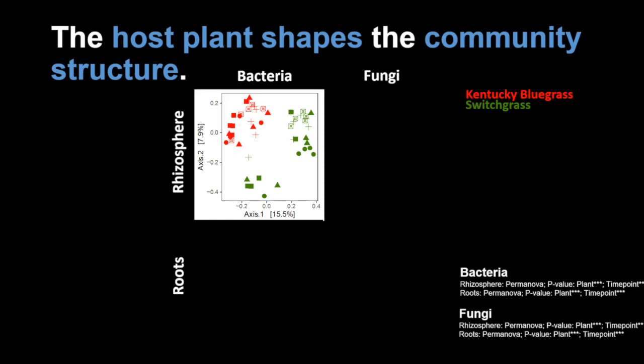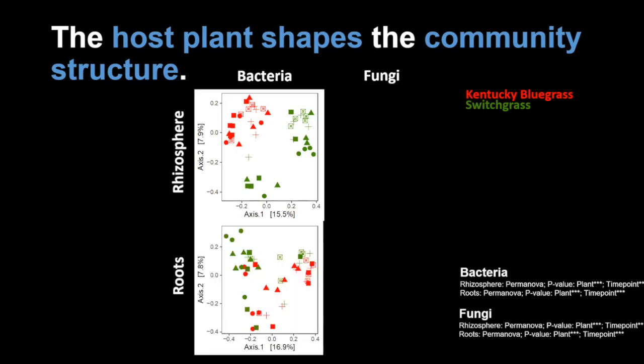They have different communities — red being Kentucky, green being switchgrass. We can see here in the rhizosphere how they are grouping together in this PCA plot. In this graph, the closer they are grouped, the more similar they are; the farther apart, the more different they are. We can also see in the same way how in the roots, in the bacterial community, they are different — red here, green here.